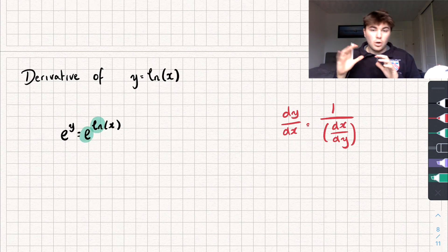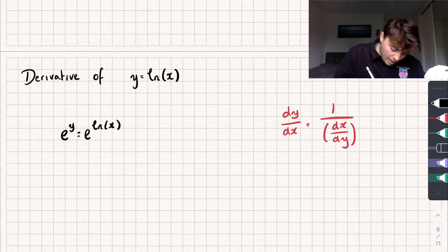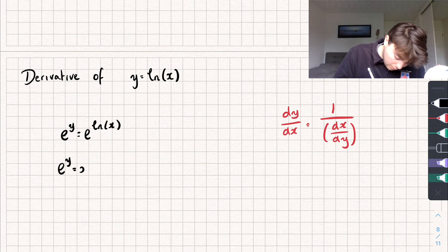And e and the natural log are inverse functions so they're going to cancel each other out and we're left with e to the y equals x.